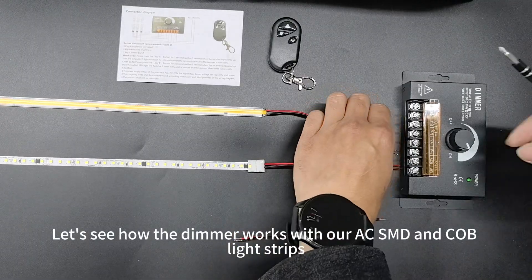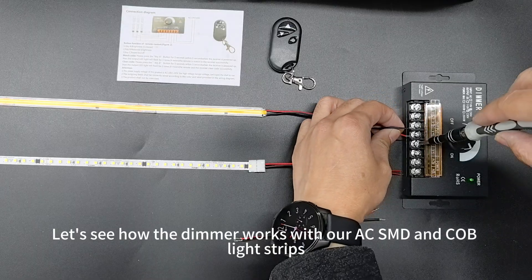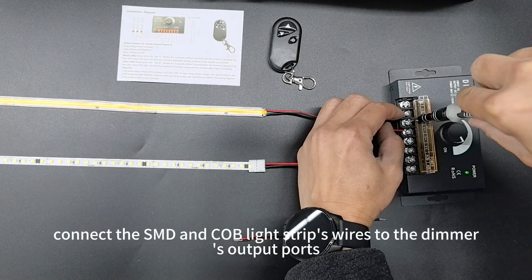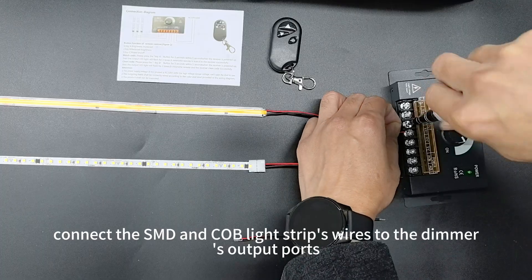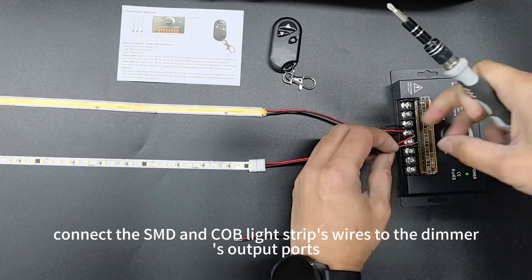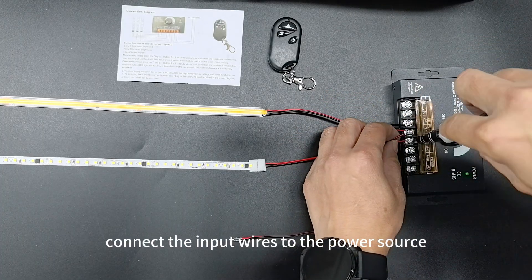Let's see how the dimmer works with our AC-SMD-NC-OB light strips. First, connect the SMD-NC-OB light strip wires to the dimmer's output ports, then connect the input wires to the power source.